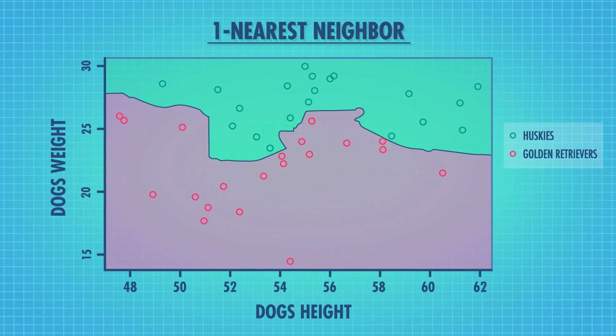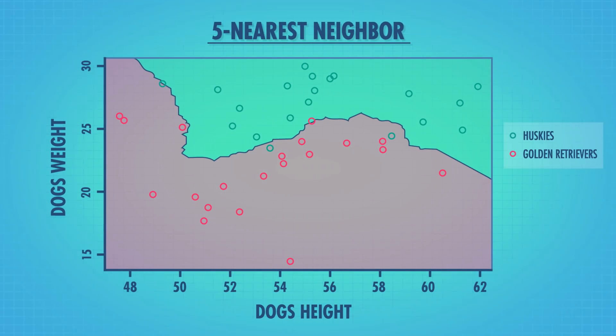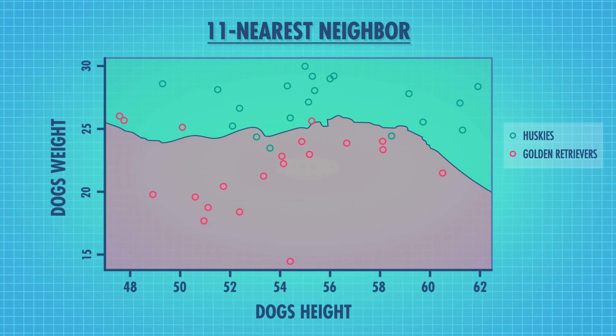One thing we need to decide is how many neighboring data points to look at. The K in KNN is a variable representing the number of neighbors we'll look at for each point we want to classify. When we wanted to know whether Chase was a Husky or Golden Retriever, we looked at the four closest data points, so K equals 4. But we can set K to be any number — we could look at one nearest neighbor or 15 nearest neighbors. As K changes, our classifications can change.